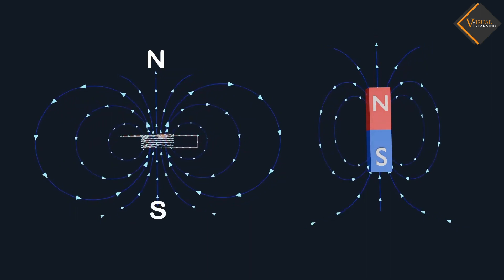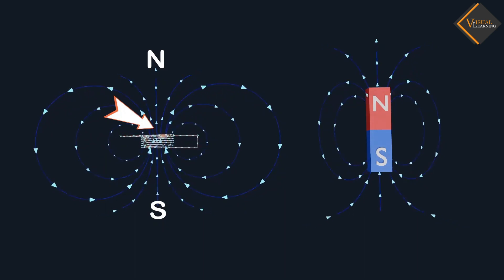The field lines inside the solenoid are in the form of parallel straight lines. This indicates that the magnetic field is the same at all points inside the solenoid. It means the field is uniform inside the solenoid.